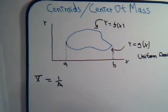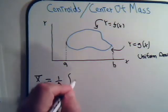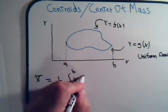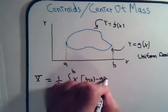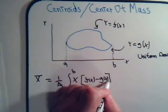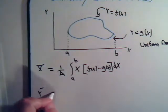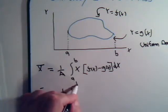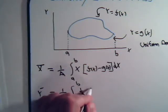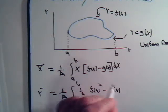The equation to find the x coordinate for the center of mass equals one over A — where A is the area — integrating from a to b of x times f of x minus g of x dx. And the y coordinate equals one over the area, integral from a to b of one-half times f of x squared minus g of x squared.